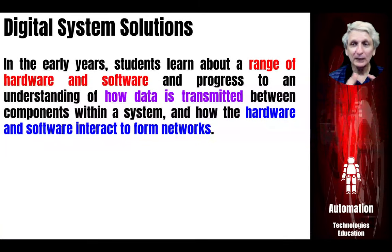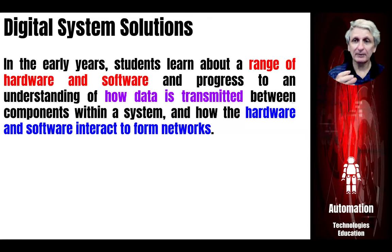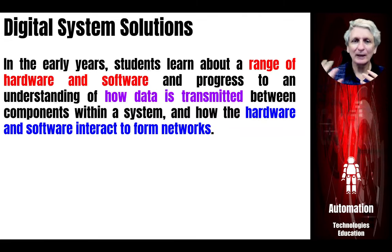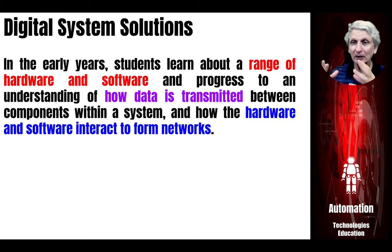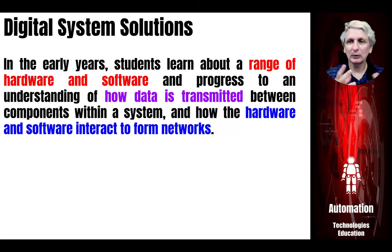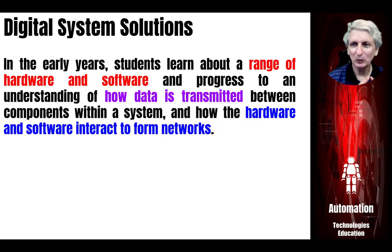In the early years, students learn about the different types of hardware and software that exist and a little bit about how data is transmitted between various elements of a system — saving things to a flash drive, to a hard disk, or to the Internet. There are ways of transmitting information between devices, such as attaching a file to an email and sending it to another device. As they go up into the years, we start looking at the more technical processes — how a network works and how we can actually transfer files through various network processes.